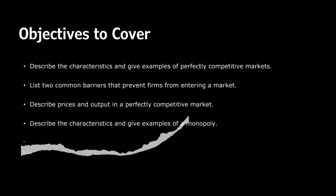Secondly, the products in a perfectly competitive market are homogeneous, meaning they are identical in the eyes of consumers. An example is the market for standardized commodities like crude oil or basic agricultural products.